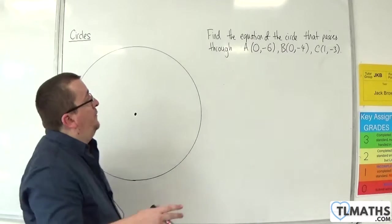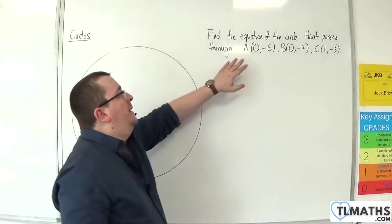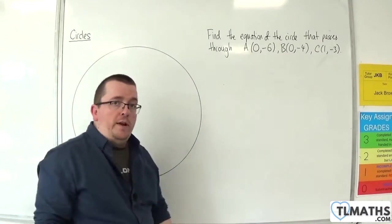So let's say I wanted to find the equation of the circle that passes through the points (0, -6), (0, -4), and (1, -3).